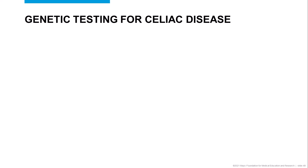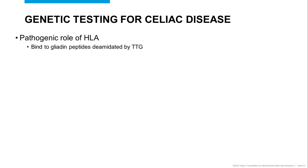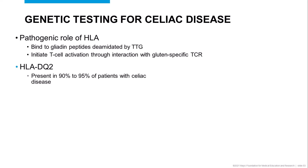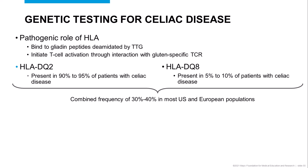Another component sometimes useful in the evaluation of a patient with suspected celiac disease is assessing for the presence of the genetic risk factors HLA-DQ2 and HLA-DQ8. These HLA alleles play a role in the pathogenesis of celiac disease by binding to and presenting deamidated gliadin peptides to T cells and initiating T cell activation. HLA-DQ2 is present in 90 to 95 percent of patients with celiac disease, while HLA-DQ8 is found in the remaining five to ten percent. Unfortunately, 30 to 40 percent of the general population of the United States is also positive for HLA-DQ2 or DQ8.